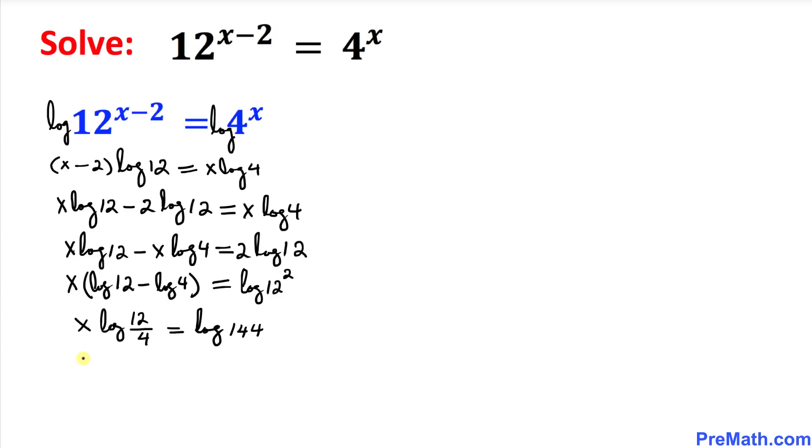So we can write this: x times log of 12 divided by 4 is going to be 3, equals to log of 144.